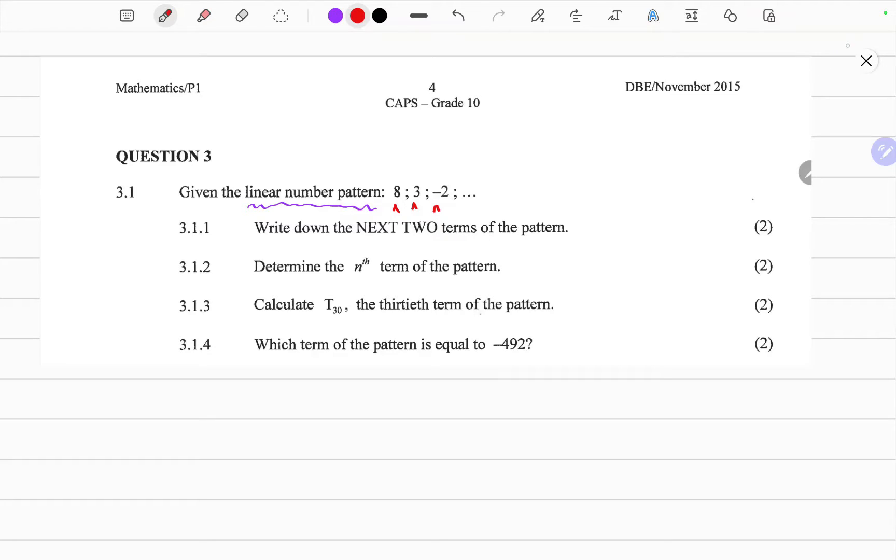So that already is a hint that indicates that we are subtracting. And by inspection, it's quite clear that we are subtracting minus 5. So it means it continues. So this should be negative 7, and then the next term is negative 12.